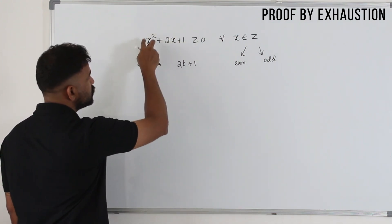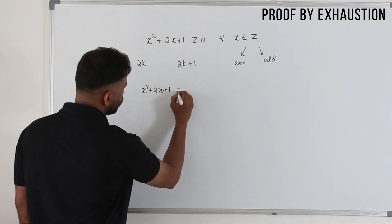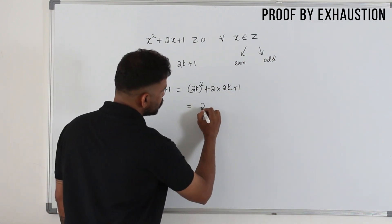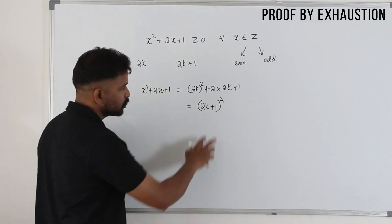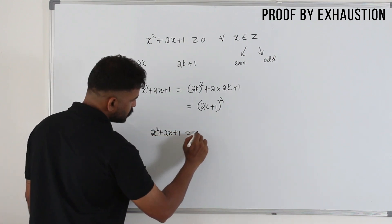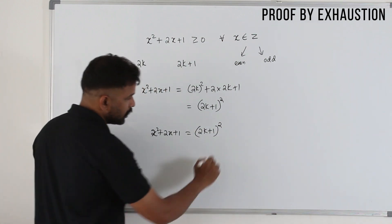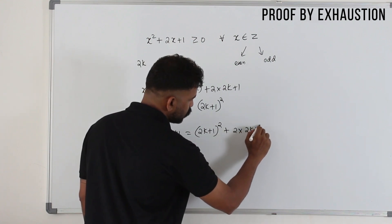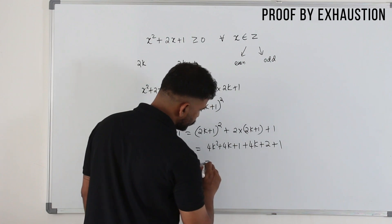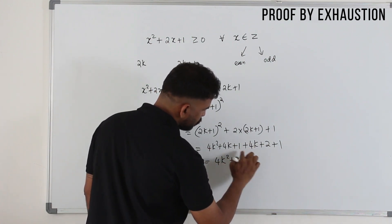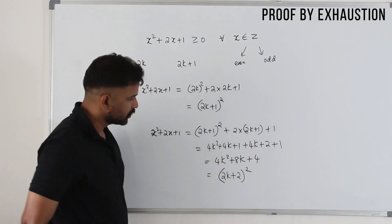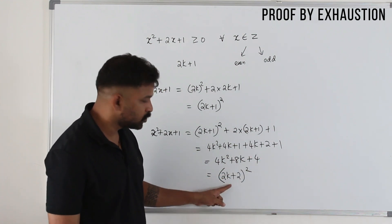For both cases, you need to prove the statement is non-negative. Take x² + 2x + 1 and substitute x = 2k: (2k)² + 2(2k) + 1, which you can write as (2k + 1)². A square of something is always non-negative. Now take the odd case: x² + 2x + 1 with x = 2k + 1 gives (2k + 1)² + 2(2k + 1) + 1. Expanding: 4k² + 4k + 1 + 4k + 2 + 1 = 4k² + 8k + 4, which you can write as (2k + 2)². This is also non-negative.